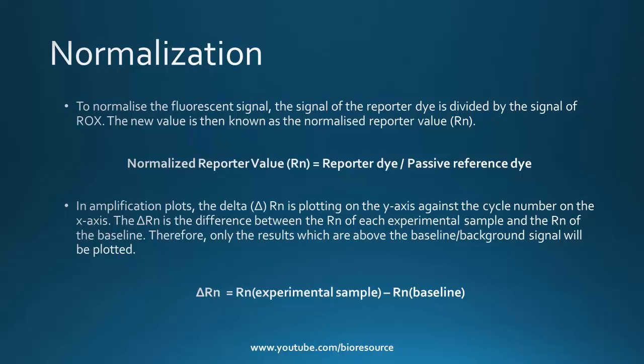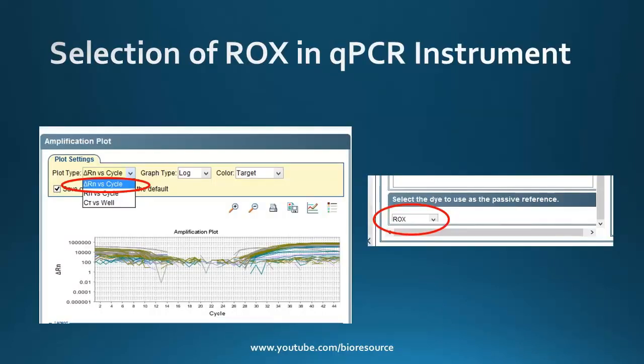It is not necessary to add ROX to your qPCR mixture, but adding it can help reduce variations in fluorescent signals between samples. Its use is dependent on the qPCR instrument being used, and you should check whether the instrument has the capability of measuring the ROX channel or ROX signal.